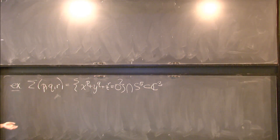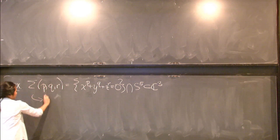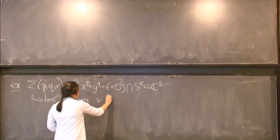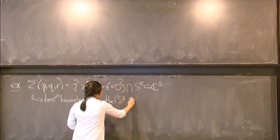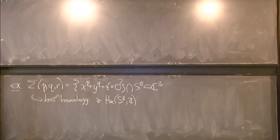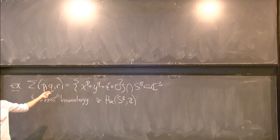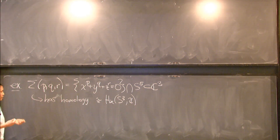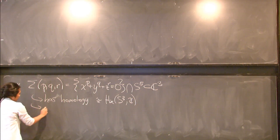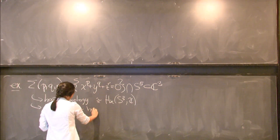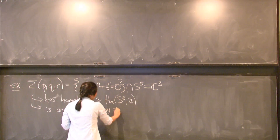This is a closed oriented smooth three manifold, and if you compute its homology, you'll find that it has the same homology as S³. S³ is in some sense the simplest closed three manifold. On the level of homology, σ(p,q,r), where p, q, and r are relatively coprime integers, has the same homology as S³, and it's an example of an integer homology three sphere.